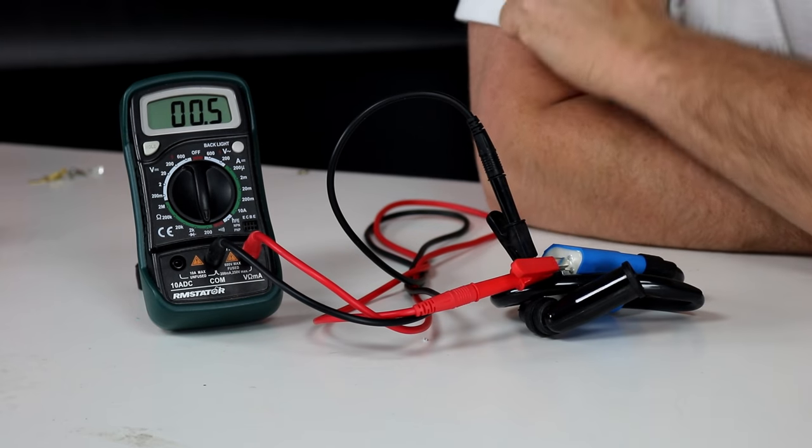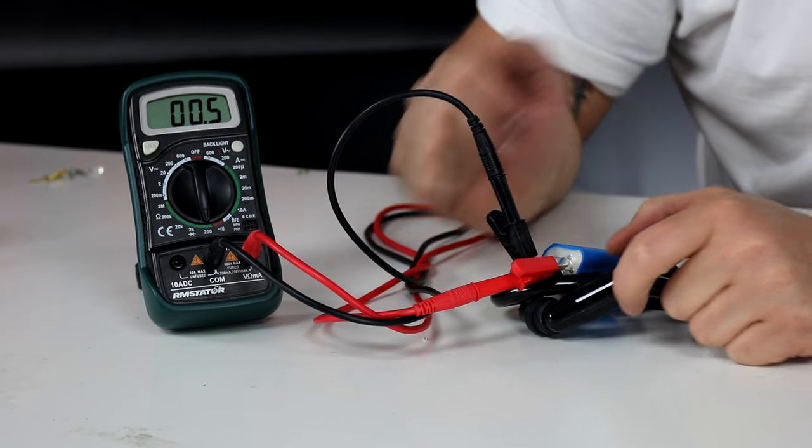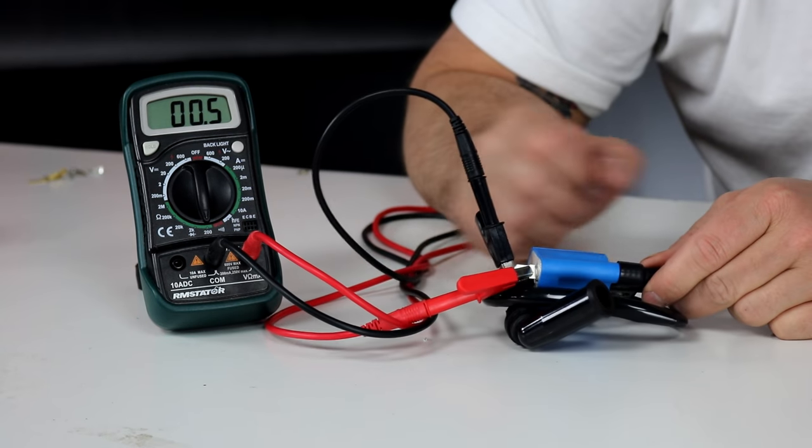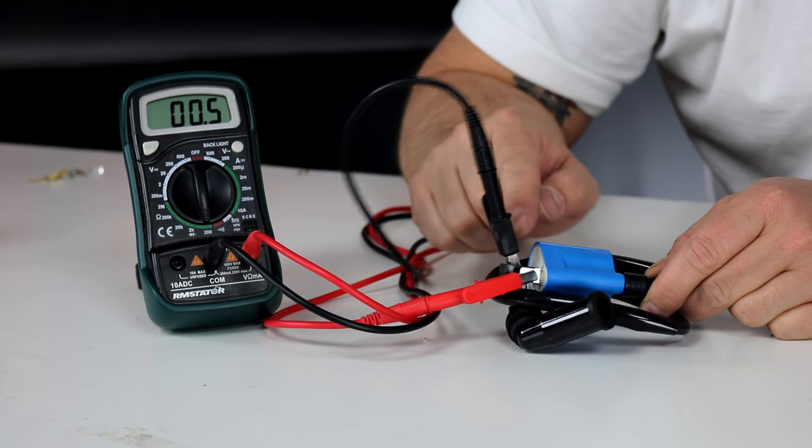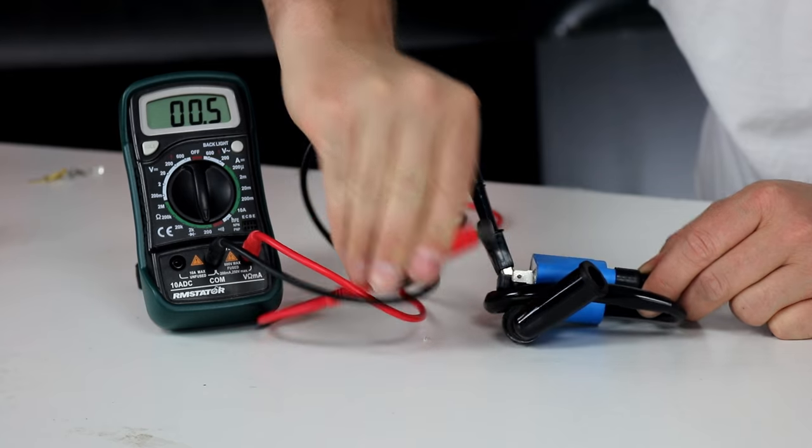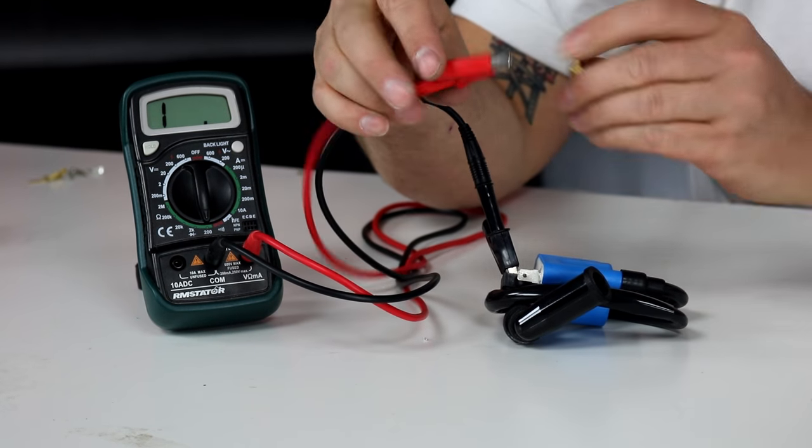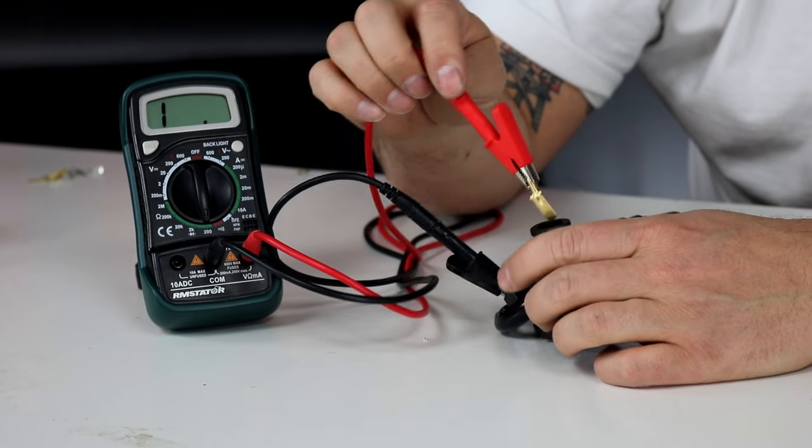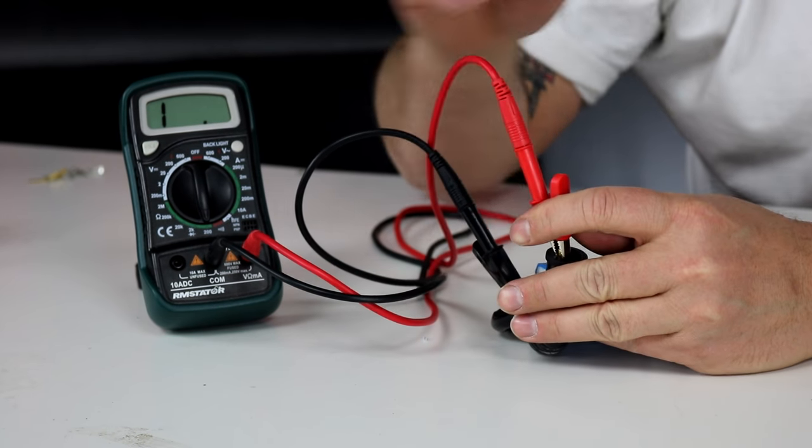Now I want to measure the secondary. Depending on the type of coil, there's different ways to measure it. On this coil that's meant for a single spark plug, the secondary coil is between the ground or the mounting bar in the center and the spark plug terminal at the end of the wire. To reach it, I'm going to put this in here and plug it down in there.